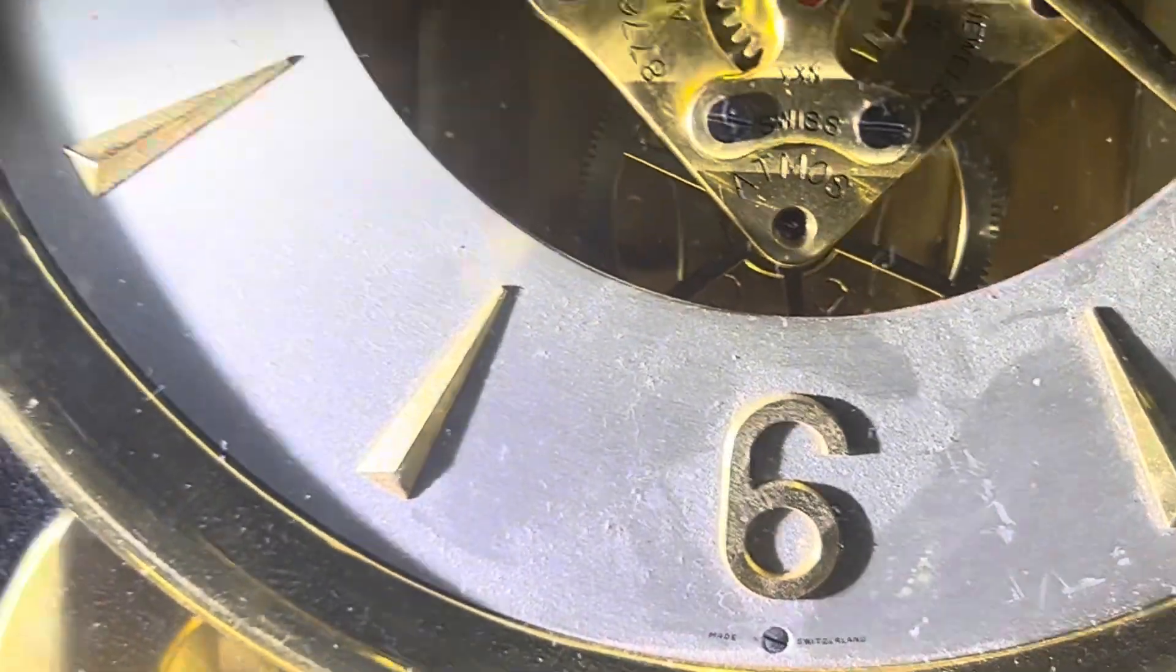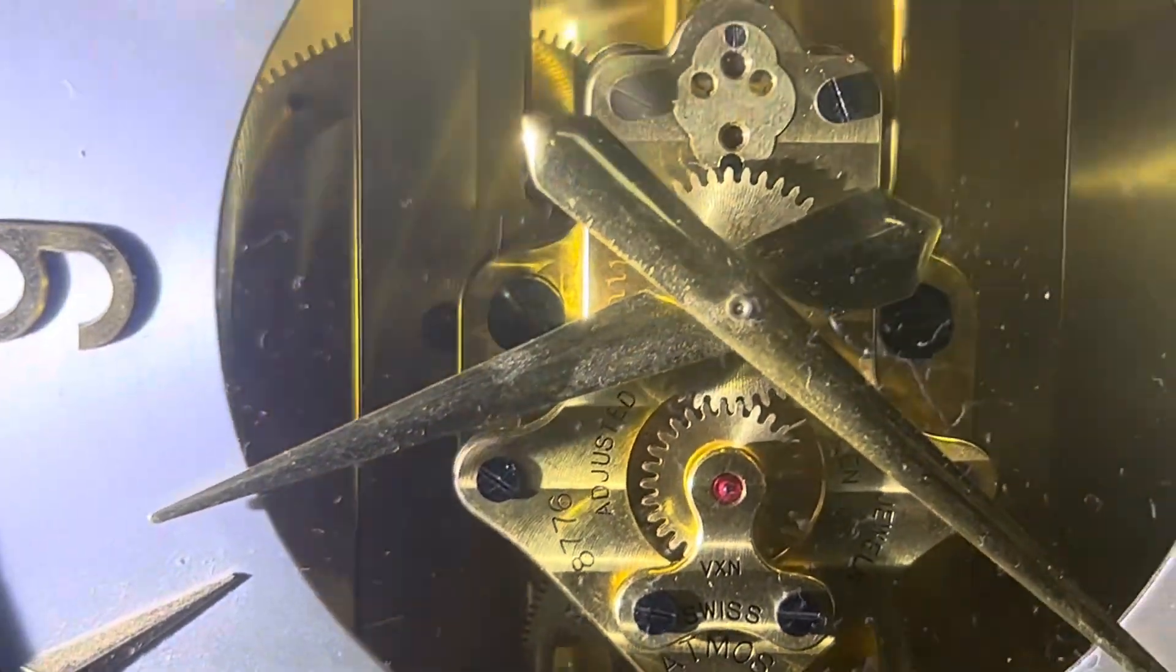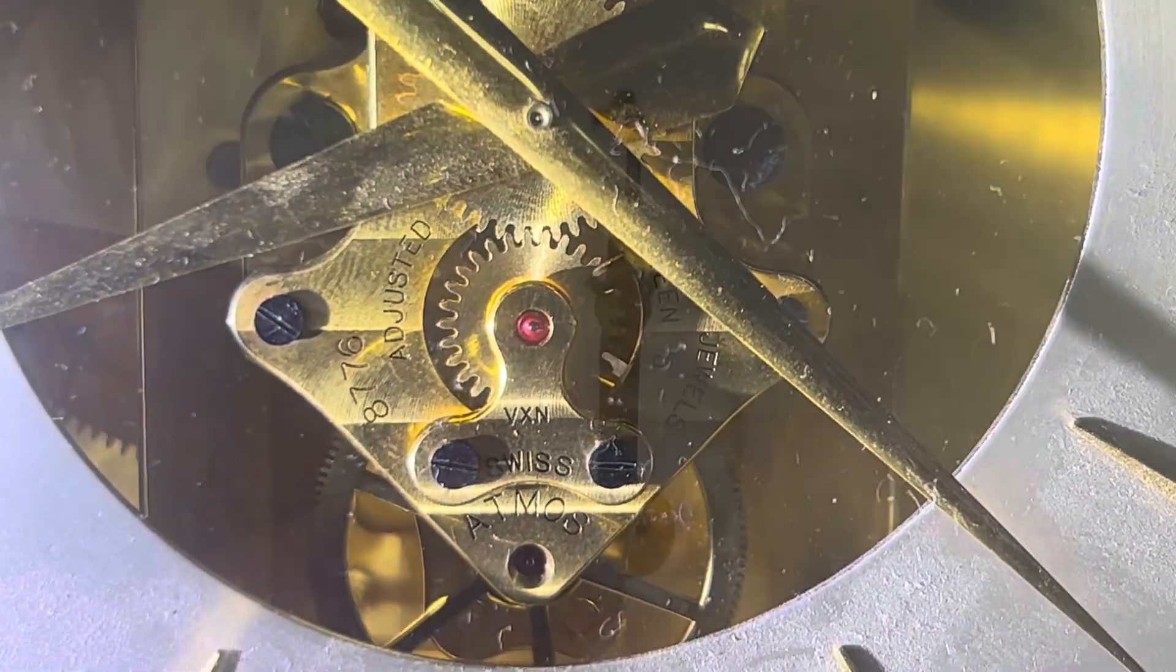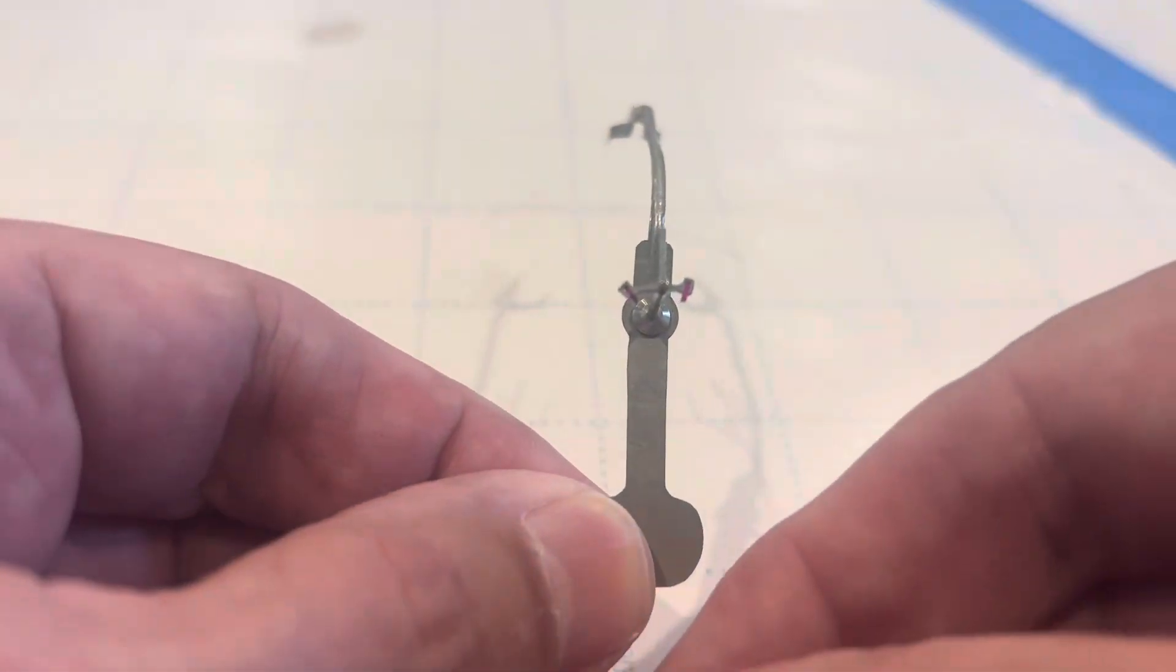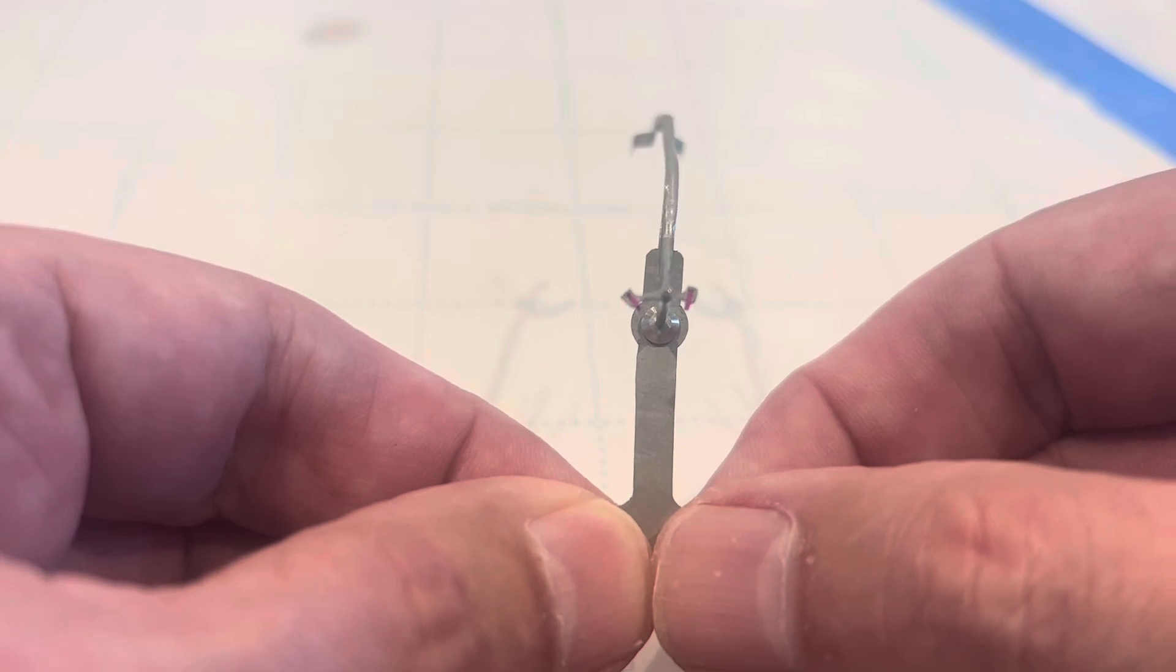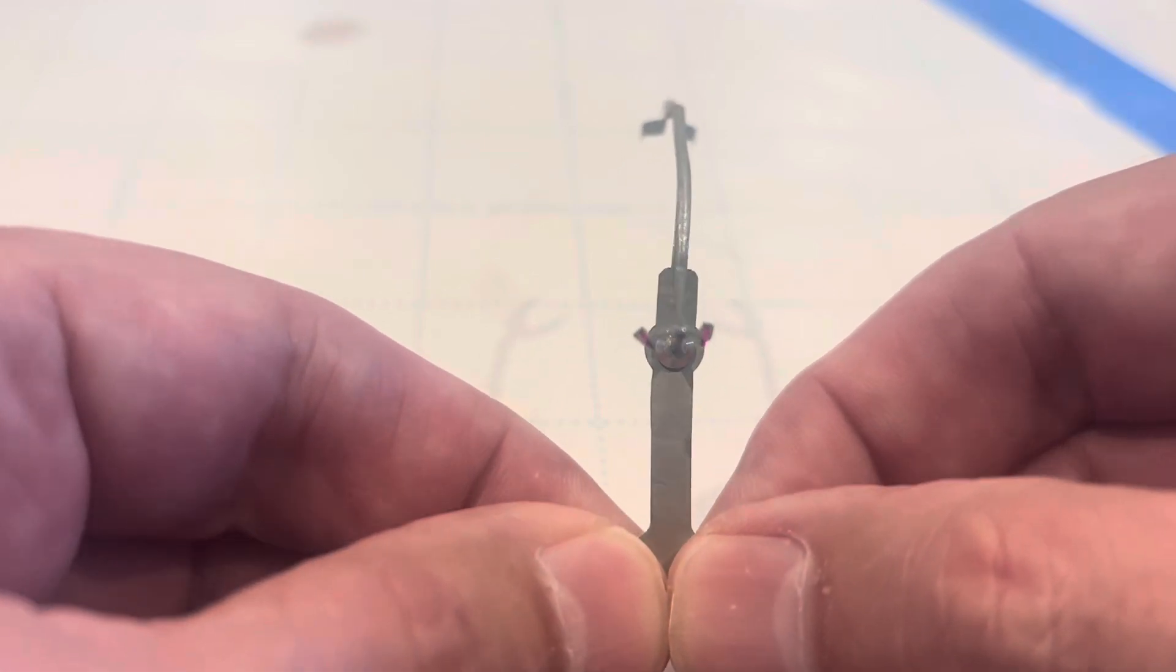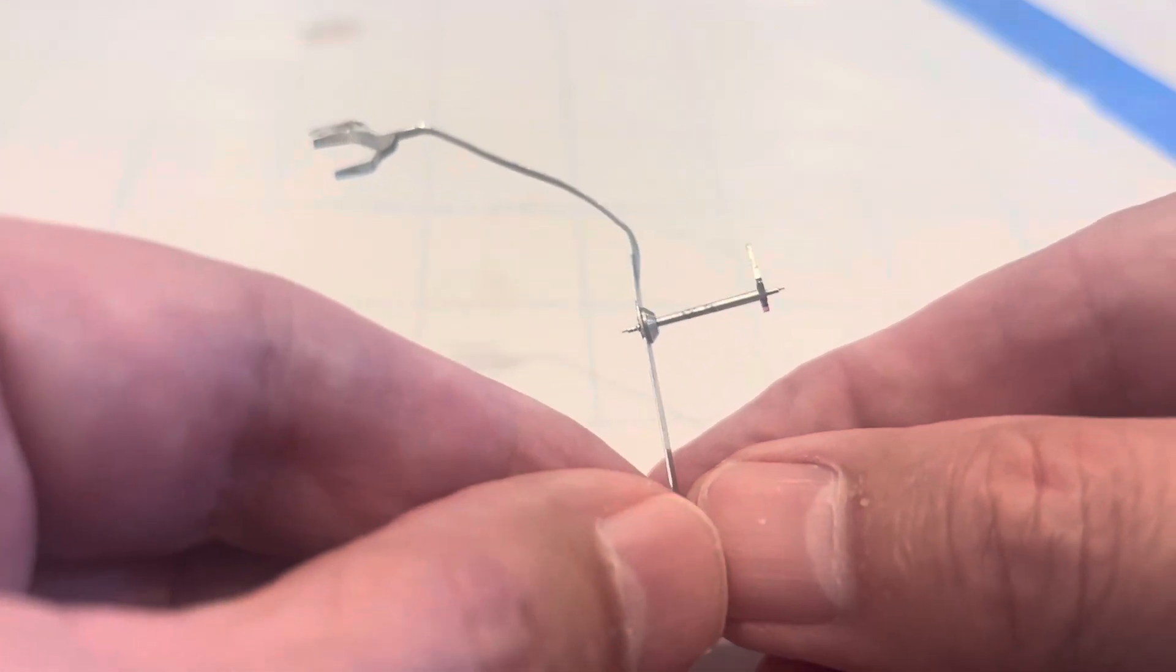Now I often hear of clocks that will run for 30 minutes like this one did and then stop. There could be a lot of reasons. One of the main reasons this clock stopped is the fork was horribly bent and it would not allow the impulse roller to operate properly.